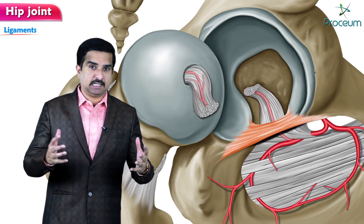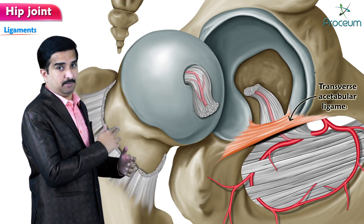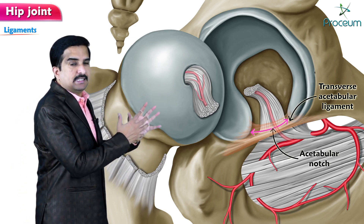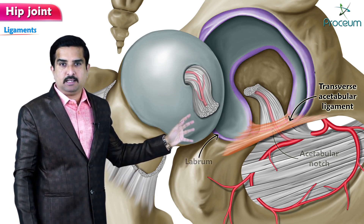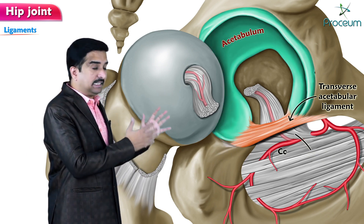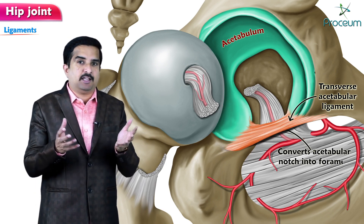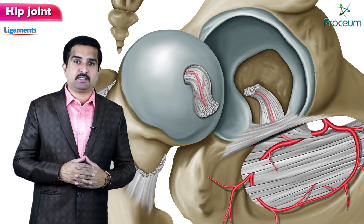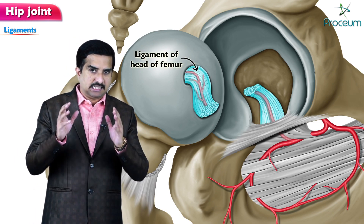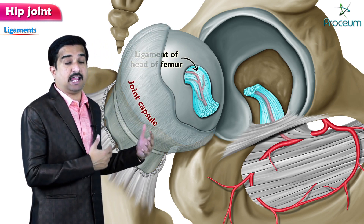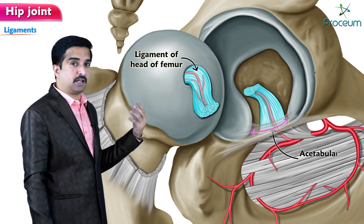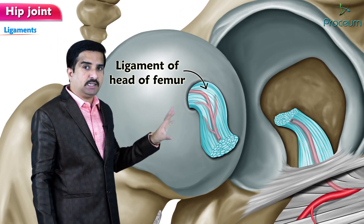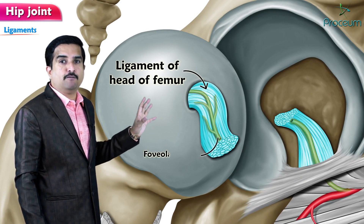Regarding the inner ligaments, the first is the transverse acetabular ligament, which runs over the acetabular notch and joins up with the inferior end of the labrum. It is the fibrous structure on the lower part of the acetabulum that converts the acetabular notch into an acetabular foramen, allowing passage of vessels and nerves into the joint space. The second inner ligament is the ligament of the head of the femur, situated within the capsule but extrasynovial in nature. It arises from the acetabular notch and inserts upon the fovea of the femur, providing a pathway for the foveolar artery to the head of the femur.